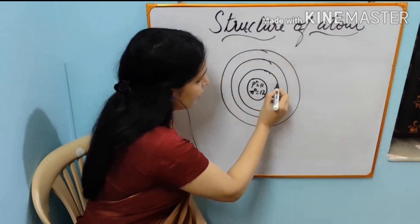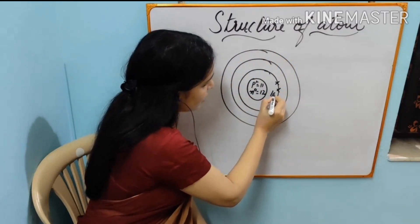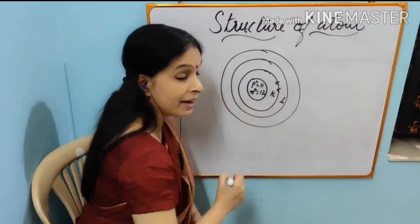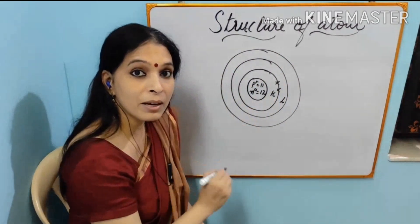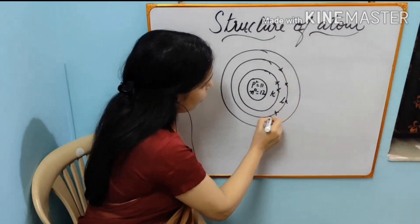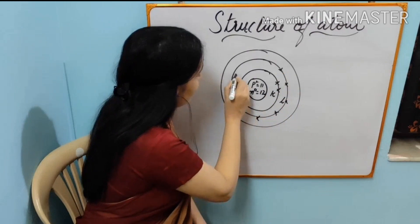The first two are arranged in the first shell which is known as K shell and second shell is known as L shell. Maximum capacity is only 8. 1, 2, 3, 4, 5, 6, 7, 8.